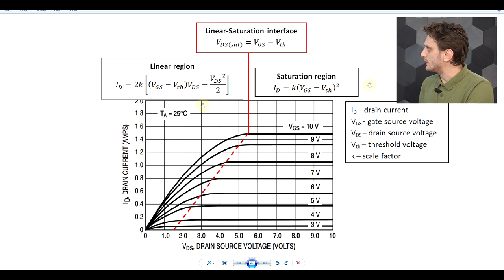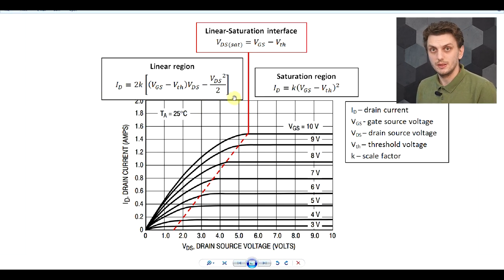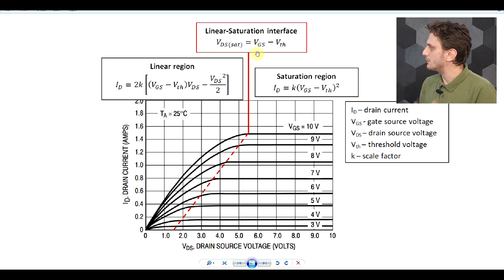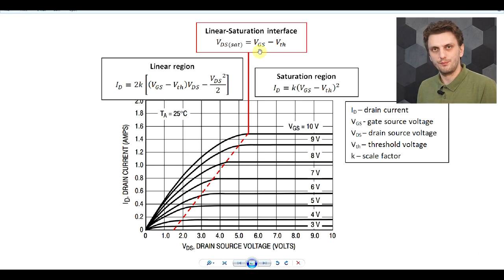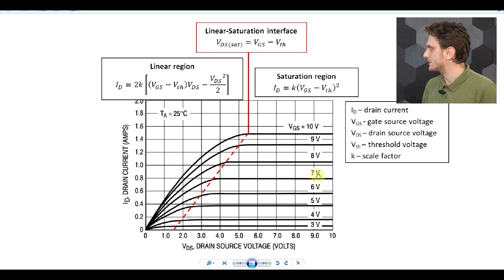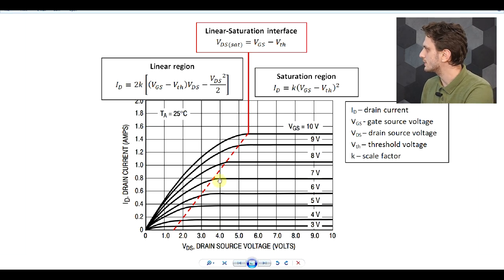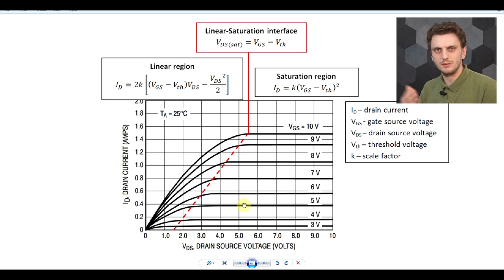The two regions have their distinct formulas for figuring out what current you'll be getting. The interface between the two happens roughly at the point where your drain-source voltage equals your gate-source voltage minus the threshold voltage. For example, if we have a drain-source voltage of 7 volts and the threshold is about 3 volts for this transistor, then this interface point is roughly at about 4 volts — it's an approximate point, just to get an idea.